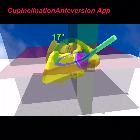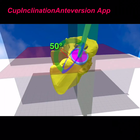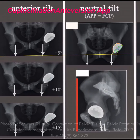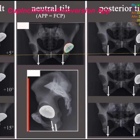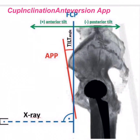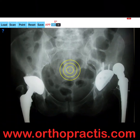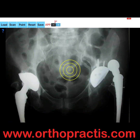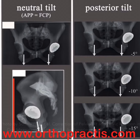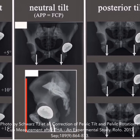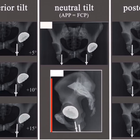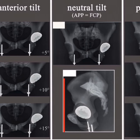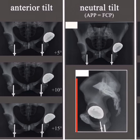Pelvic tilt may lead to misinterpretation of cup position on anteroposterior pelvic radiographs. The APP angle is added in calculation and can be adjusted manually according to the surgeon's preference. In case pelvic tilt measured by APP angle is known, by pressing the plus or minus button the preferred angle, either negative or positive, can be selected. A negative angle indicates posterior pelvic tilt; a positive APP angle indicates anterior pelvic tilt. Otherwise the APP angle takes by default a zero value.